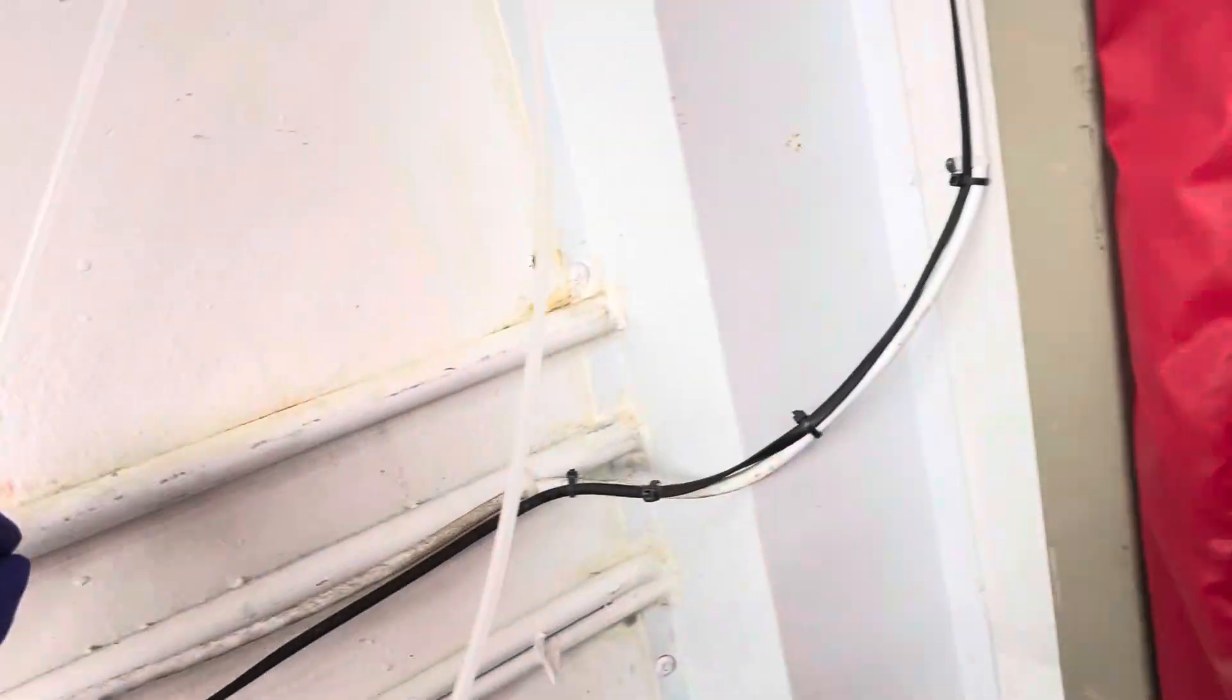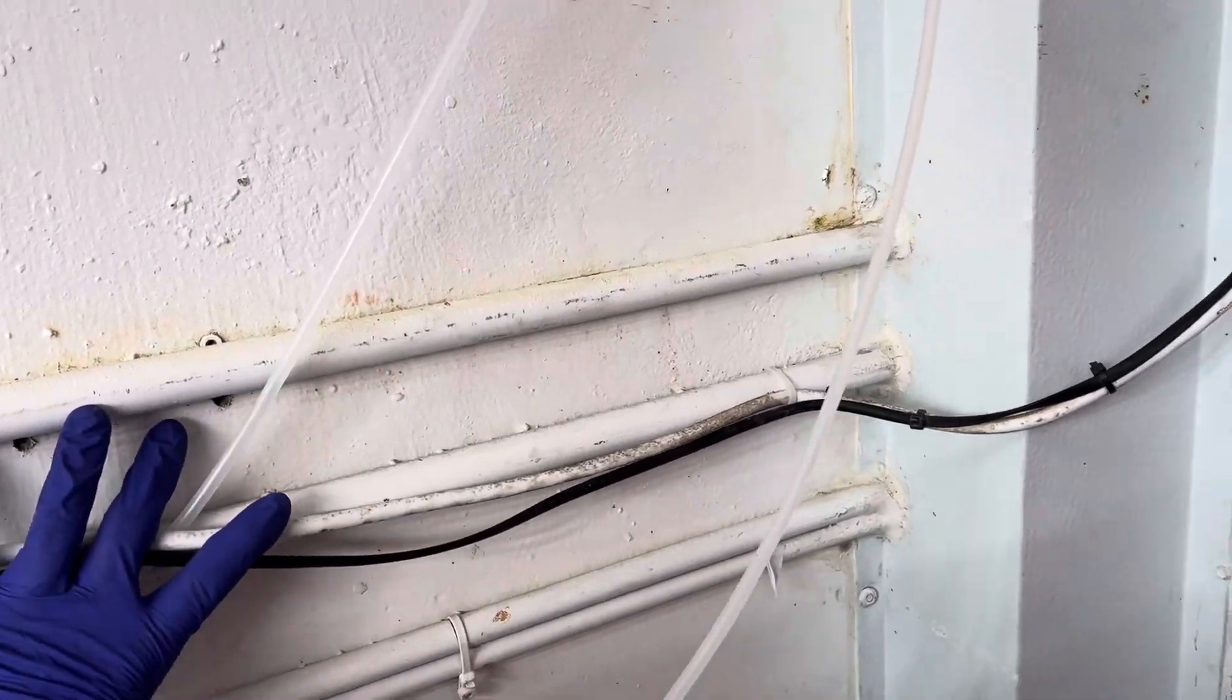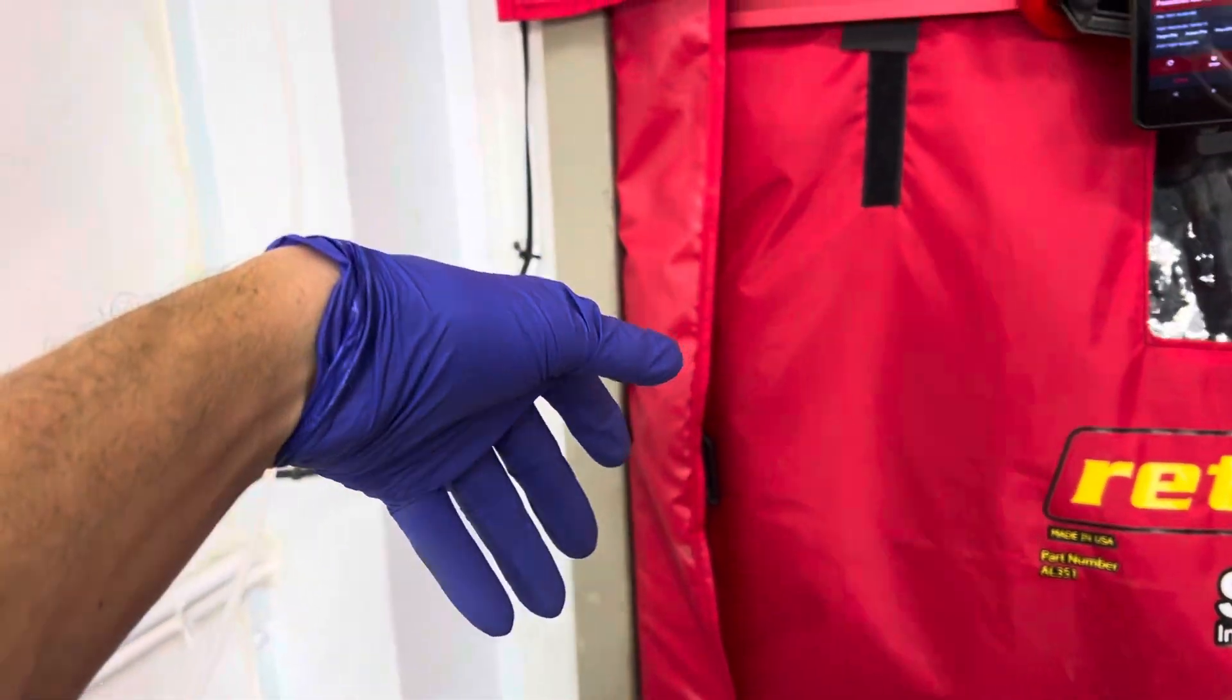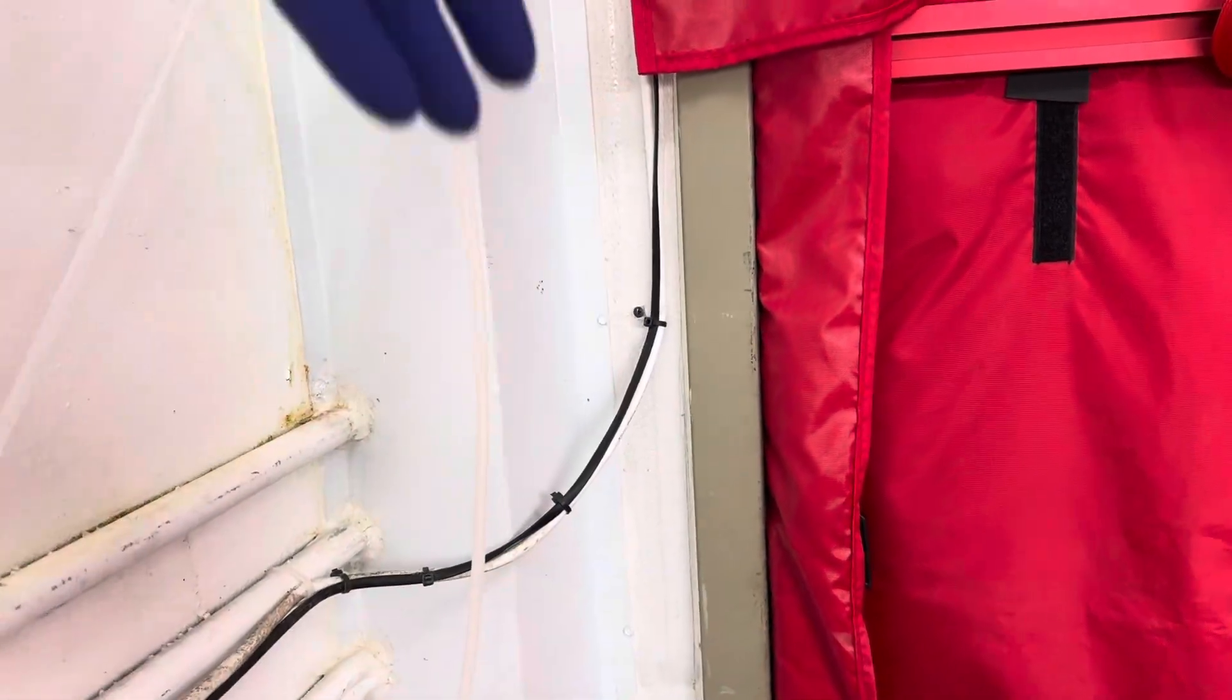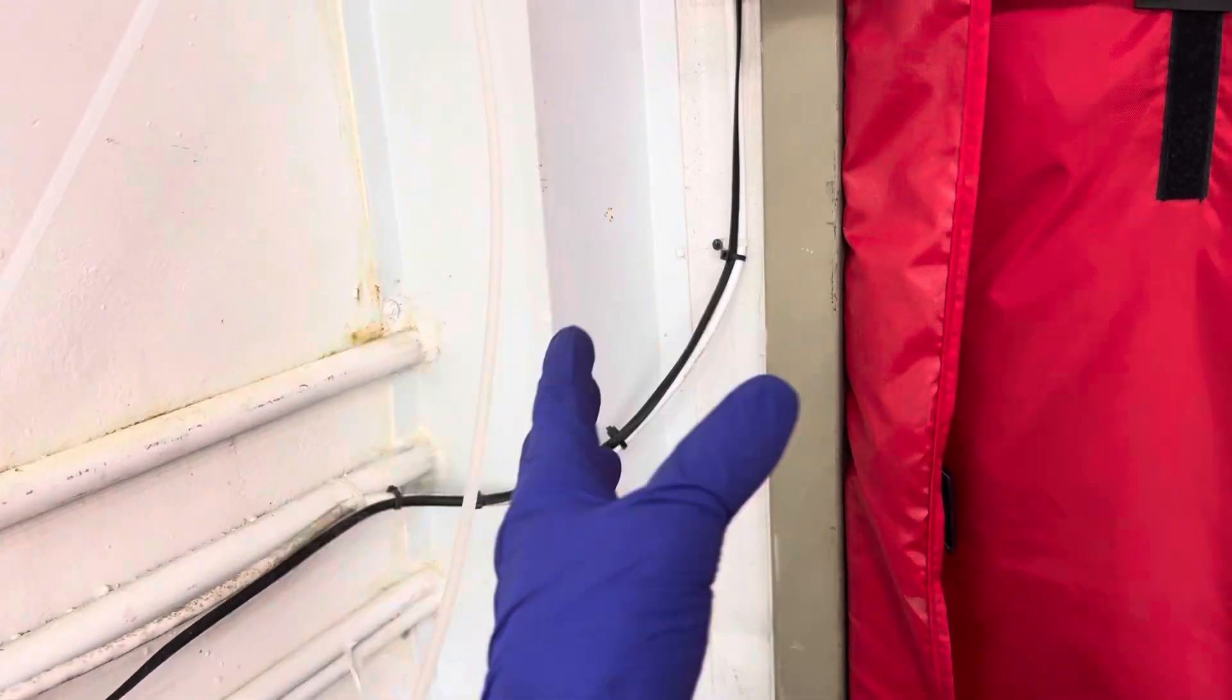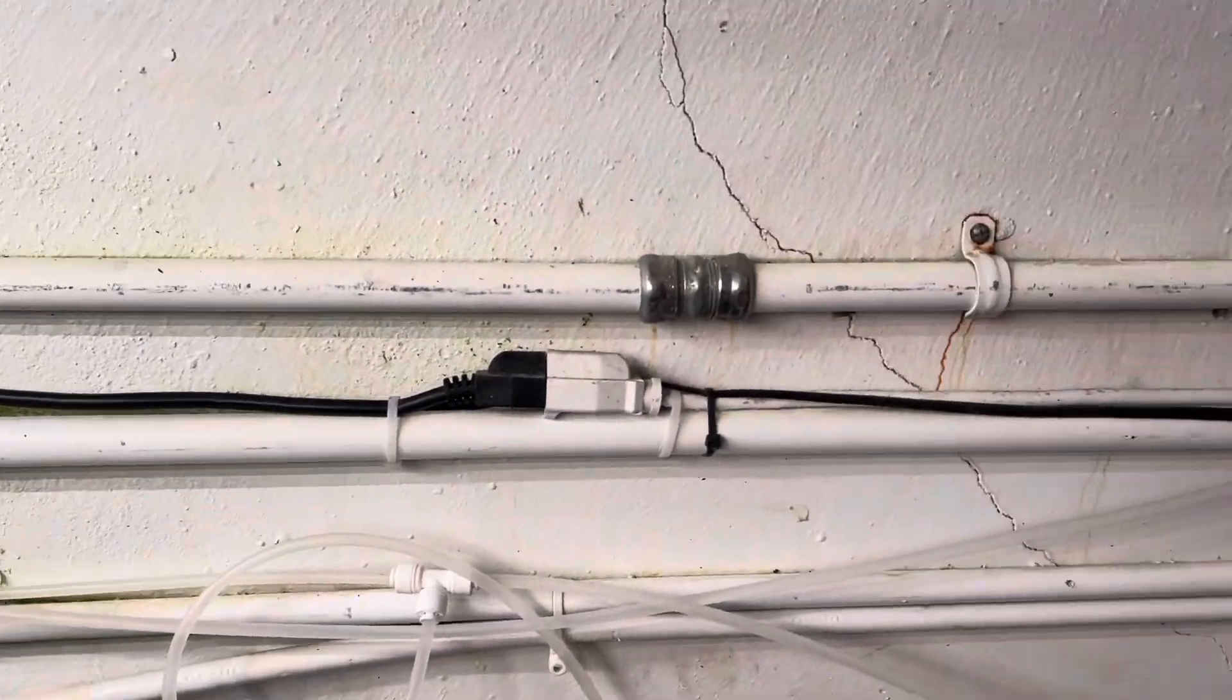And when the warm moist air hits the cold, it turns into water inside the electrical pipes and tubes. This goes a few feet over and drops down, and water fills up the electrical panel and drips all over the circuit breakers and everything like that.